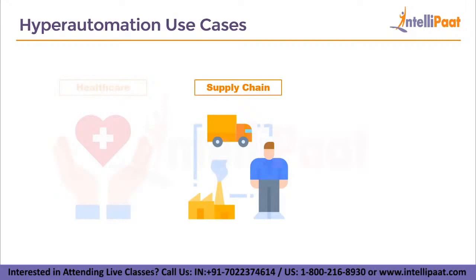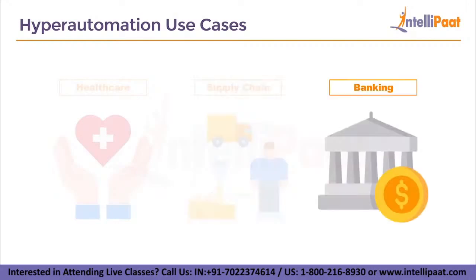The next use case is in the supply chain industry. The pandemic has greatly affected the ability to receive materials in a timely fashion, and low staffing levels have resulted in process delays and logistic challenges globally. Using robotic process automation, inventory stock checks can occur 24/7, ensuring that current inventory levels and product availability are accessible at all times.